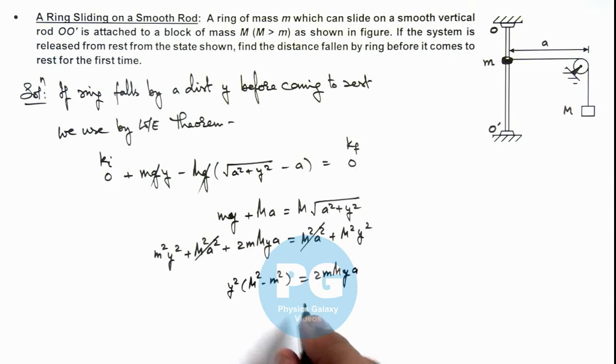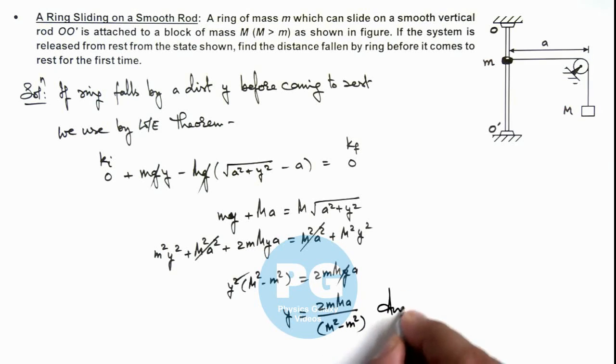So in this situation one y gets cancelled out and we get the value of y which is 2 m M ay by M square minus small m square. That will be the final result of this problem.